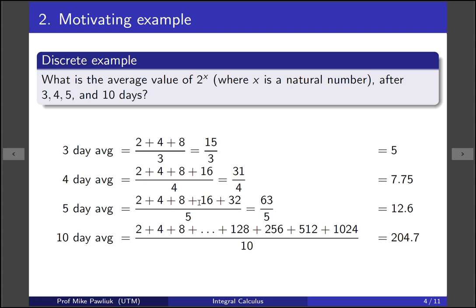12.6 is sort of between the middle and the fourth term and so it looks like it's going to float around maybe a little bit to the right of the middle. But when we take a very large term like 10, then we see that 204.7 is really around the seventh term, so it's moving away from the middle and closer to the edge. And this is what we're going to see going forward with continuous examples: the average value of an exponential function is going to be pretty close to the final term. Alright now let's see the continuous example.